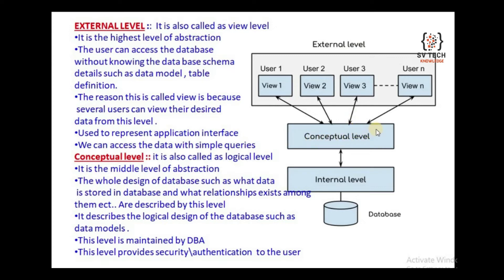The external level is also called as external schema. The user can access the database without knowing the database schema details such as data model, table definition, etc. The reason it is called view is because several users can view their desired data from this level. The external level is used to represent the application interface, and we can access the data with simple queries.